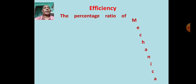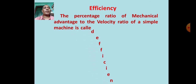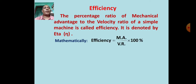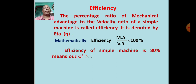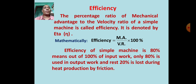The percentage ratio of mechanical advantage to the velocity ratio of a simple machine is called efficiency. It is denoted by eta (η). Mathematically, efficiency = (MA / VR) × 100%. An efficiency of 80% means out of 100% of input work, only 80% is used as output work and the remaining 20% is lost as heat due to friction.